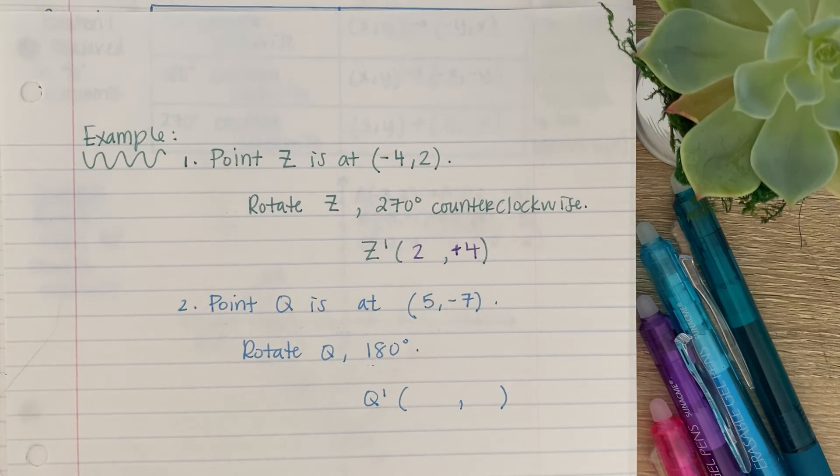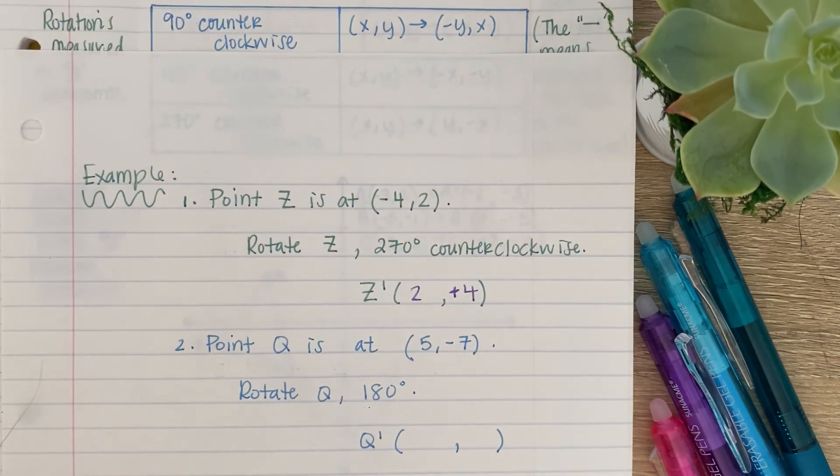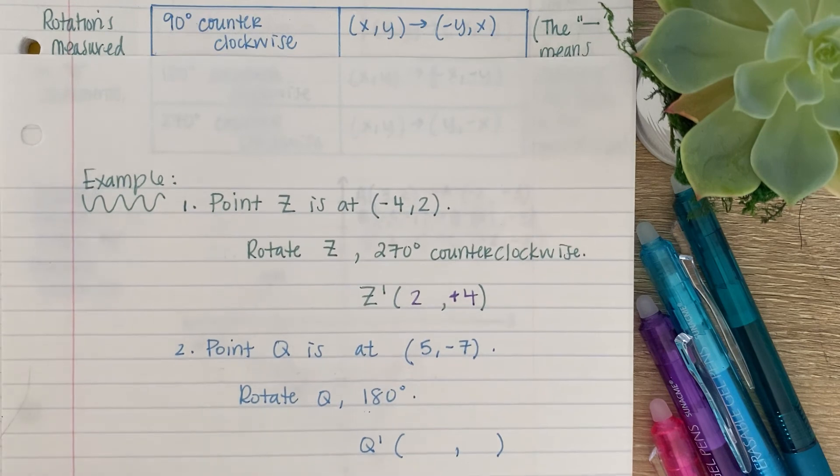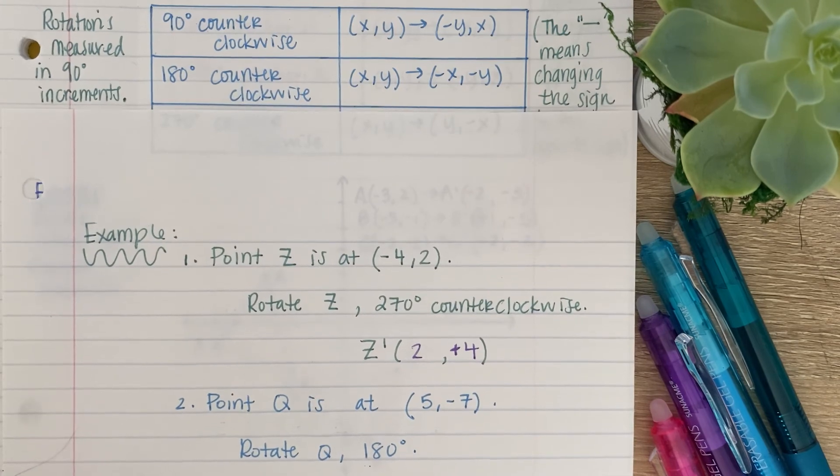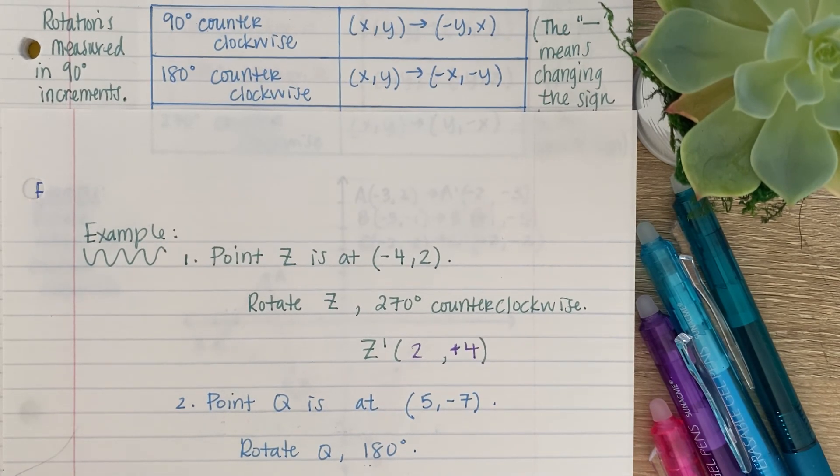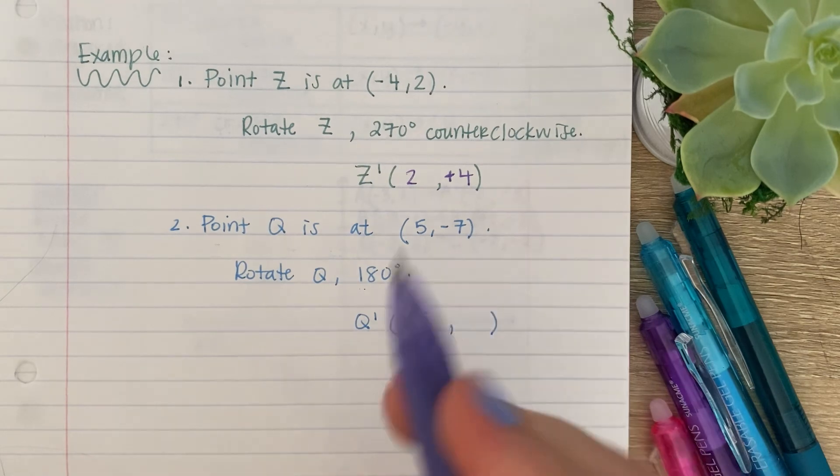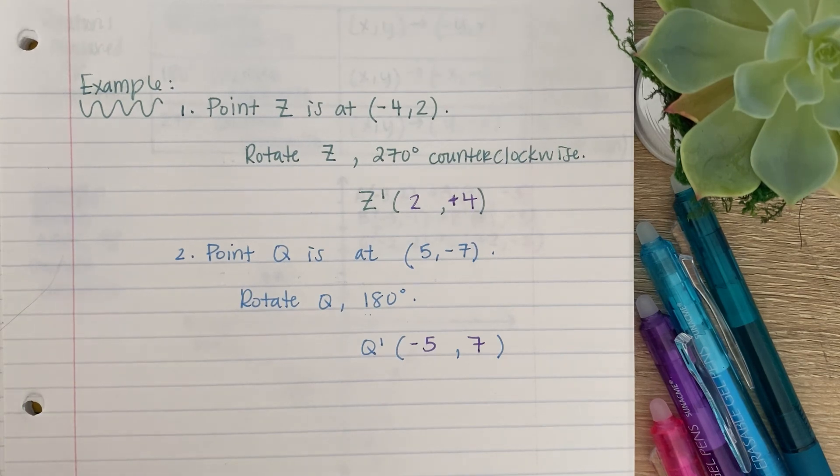So, next, point Q is at (5, -7). Rotate Q 180 degrees. And, notice how I didn't say counterclockwise because 180 degrees counterclockwise and clockwise is exactly the same thing. Mind blown. So, what is our rule for 180 degrees counterclockwise? You leave the numbers, but you change the sign on both of them. So, our positive 5 would be -5 and our negative 7 would be positive 7. And, those are our new points. If you have any questions, I know there was a lot of distractions in this video and I apologize, but it is what it is. See you later.